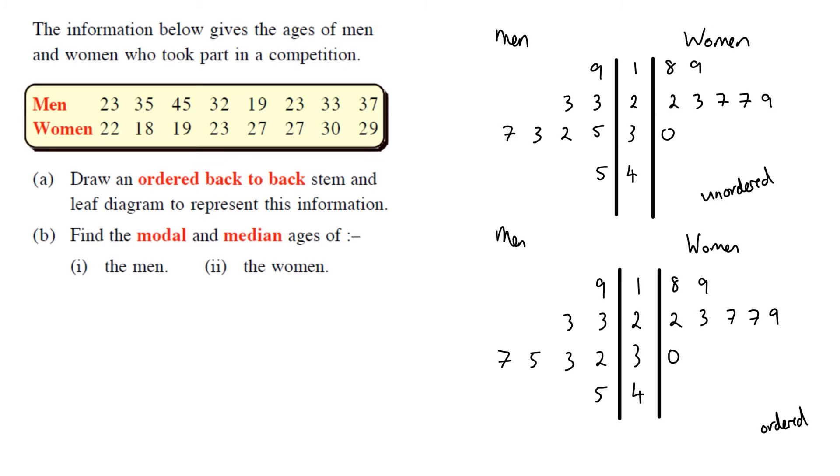So we should have, there was eight numbers for each group. So we should have eight leaves on each side. So one, two, three, four, five, six, seven, eight. One, two, three, four, five, six, seven, eight. Good, we've not missed anything. That would be your ordered back-to-back stem-and-leaf diagram to represent this information.